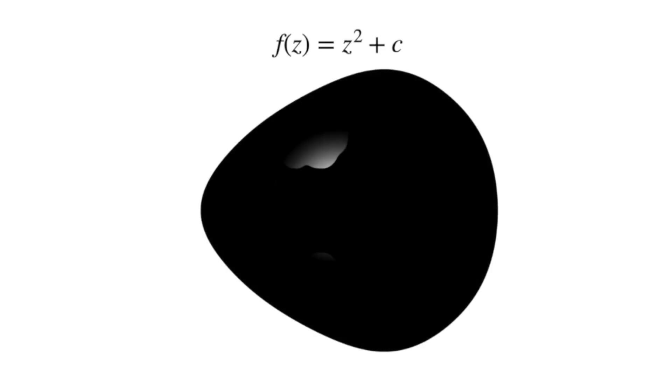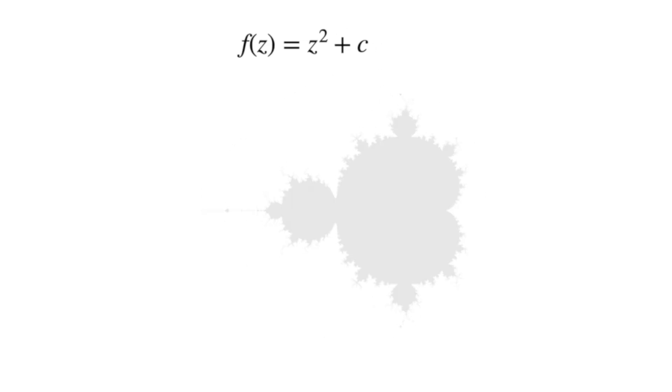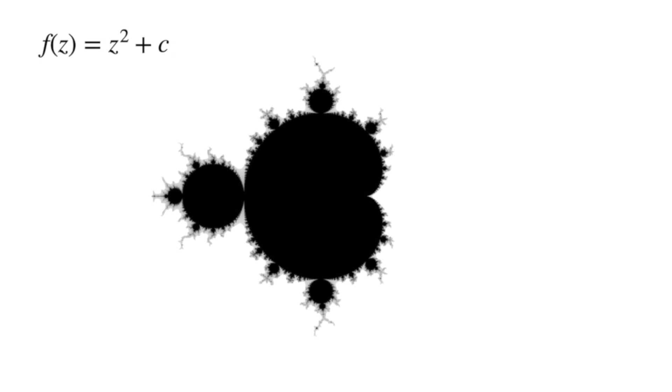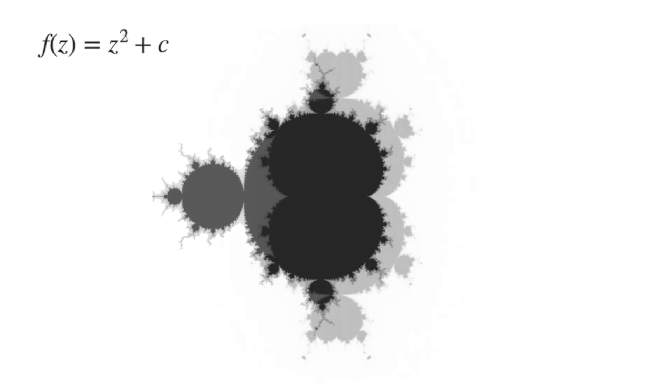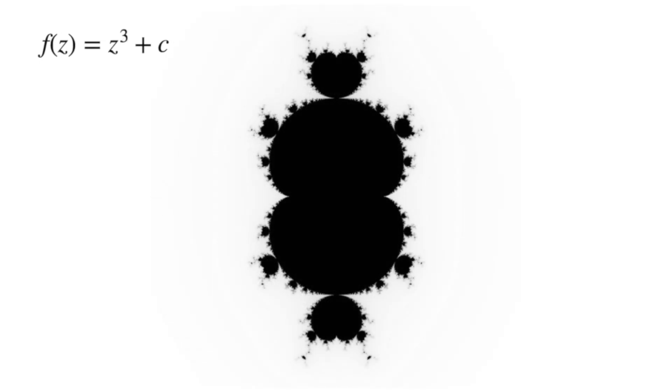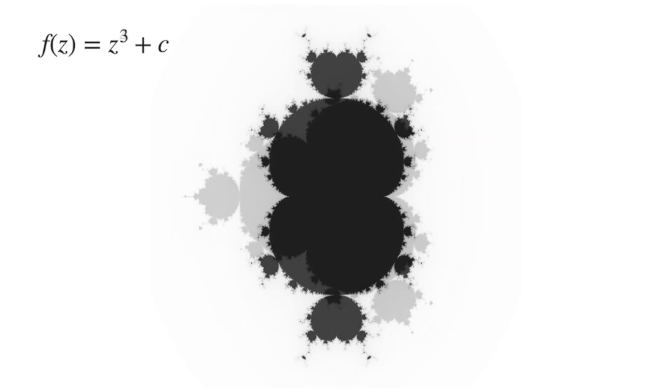Instead of iterating the function f of z equals z squared plus z, what happens if you iterate f of z equals z cubed plus z? How about f of z equals z to the fourth plus z?